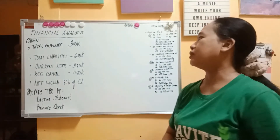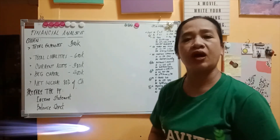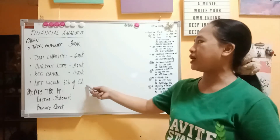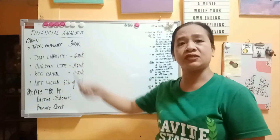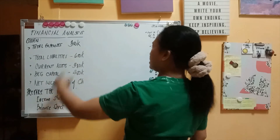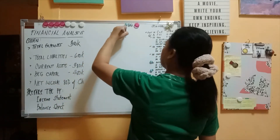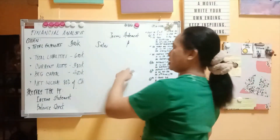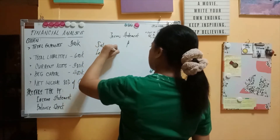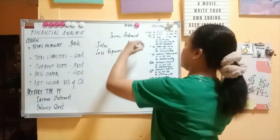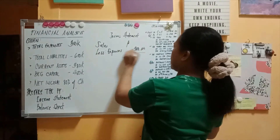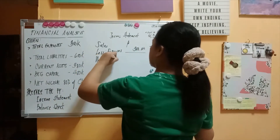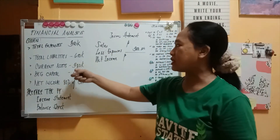Let's start with the income statement. The given values are net income, which is 80% of current assets, and total expenses of 300,000. We start with sales — leaving it blank first — then we have less expenses, with total expenses of 300,000. Sales minus expenses equals net income.